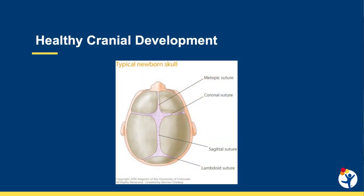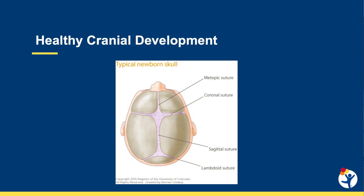Specifically, I would like to talk to you about a condition called craniosynostosis. To understand craniosynostosis, one first needs to understand how the cranium of a baby develops after birth. When a child is born, the cranium is formed by different bone pieces that are separated by areas called sutures. This separation allows for the different bones to displace and grow to create space for a brain that is developing and gaining volume very quickly during the first years of life.